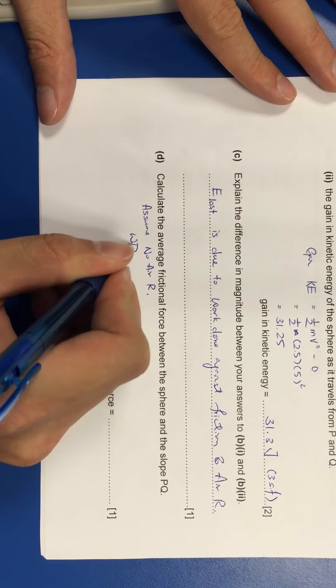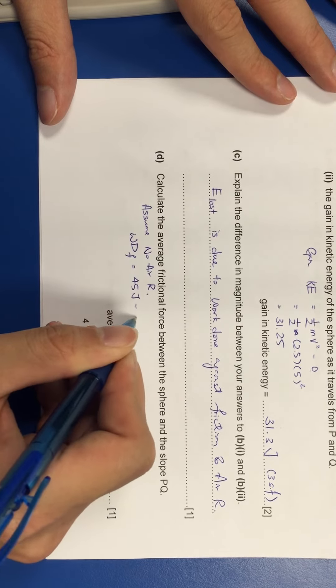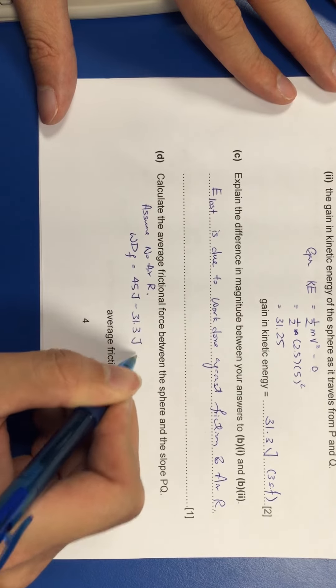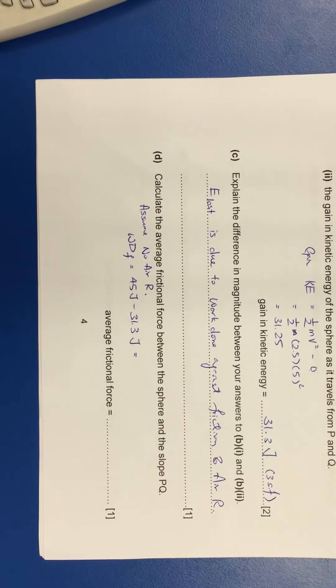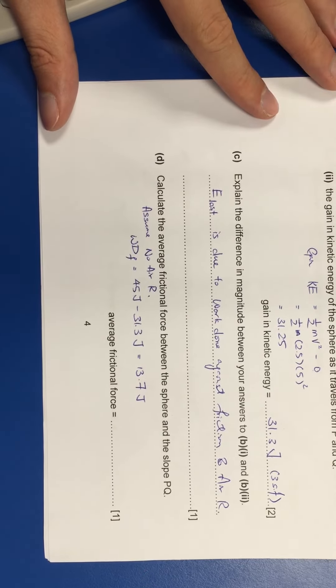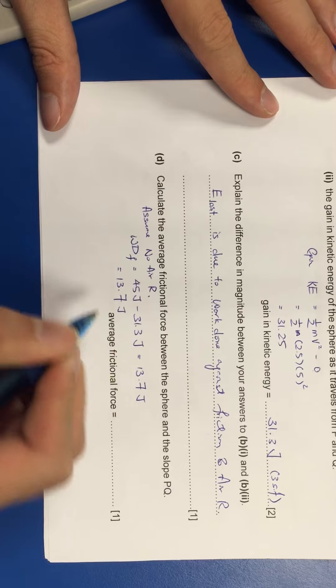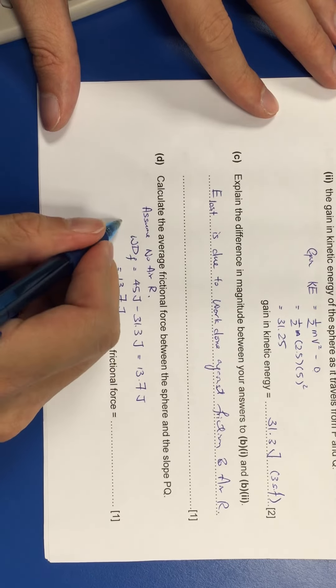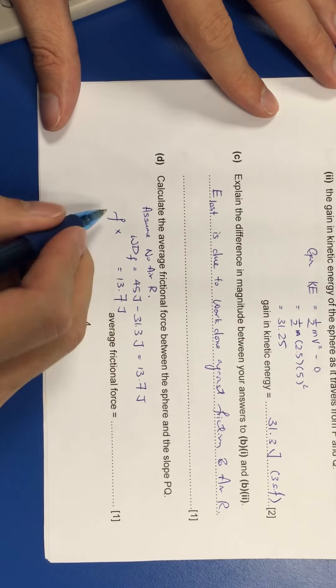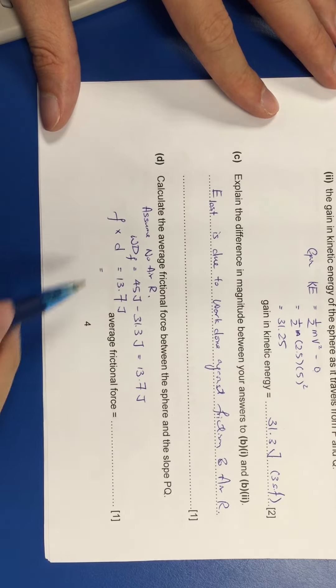So in this case, I would know that the work done against friction must be equal to 45 joules minus the 31.3 joules. So I would get 13.7 joules. This is the amount of energy I need to account for. And if I express my work done into its formula, it will be the friction multiplied by the distance that it travels. And I know that distance it travels is 5 meter.